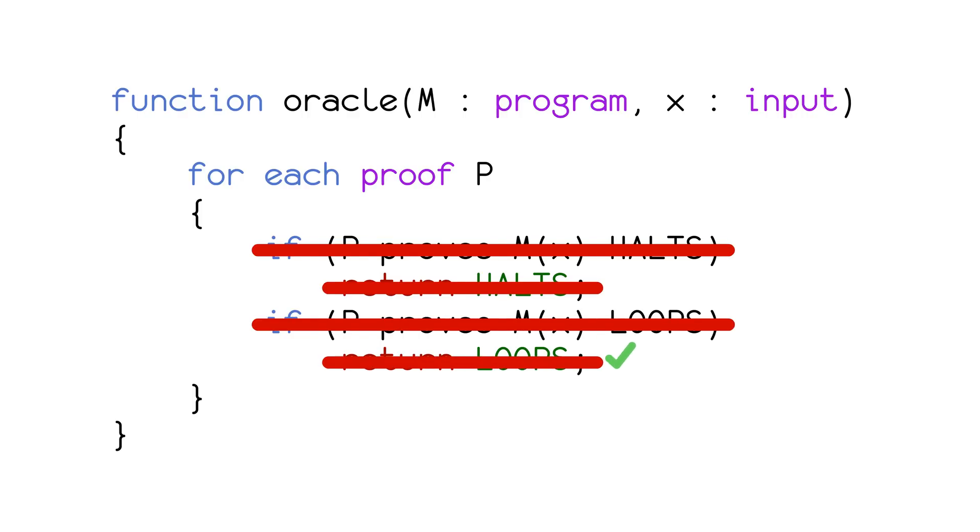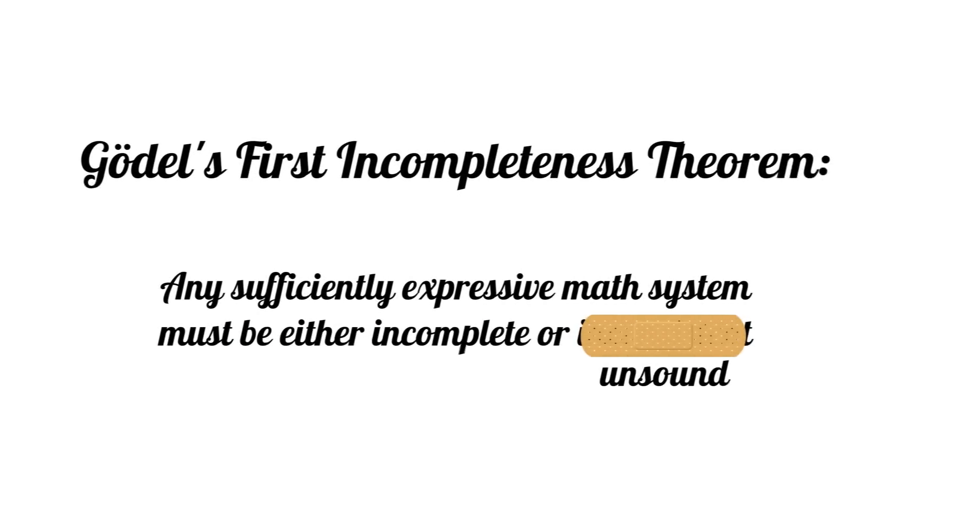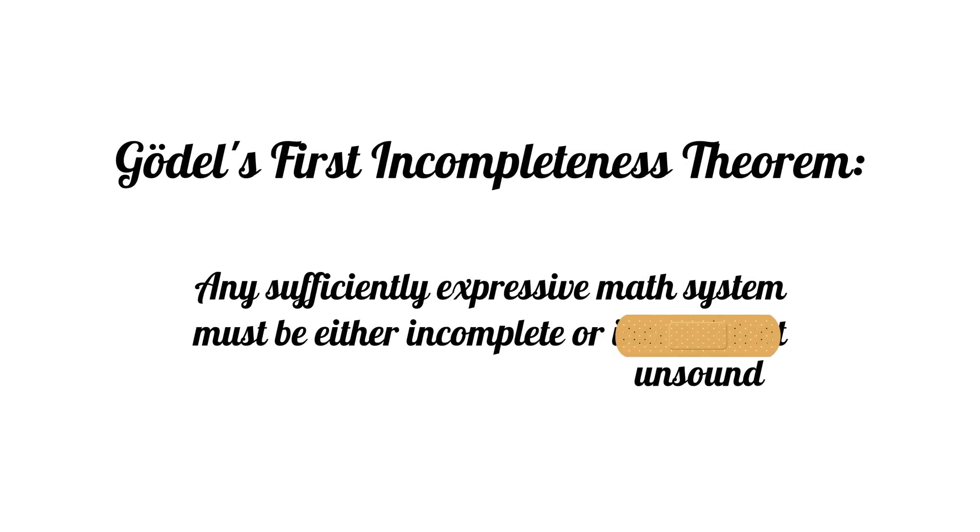If you remember, I did pull a fast one in this video, in that I subtly changed Gödel's first incompleteness theorem. Rather than prove that the math system might be inconsistent, I showed that it might be unsound. Don't worry, I'll write that wrong in the next video, and there might even be a bonus thrown in.